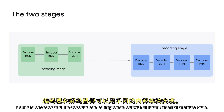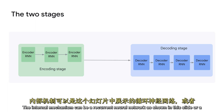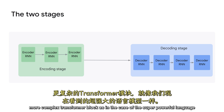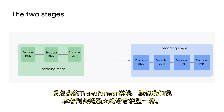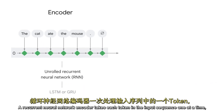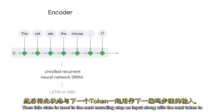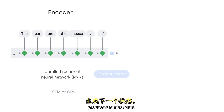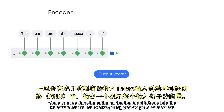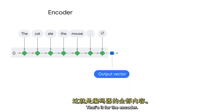Both the encoder and the decoder can be implemented with different internal architectures. The internal mechanism can be a recurrent neural network, as shown in this slide, or a more complex transformer block, as in the case of the super-powerful language models we see nowadays. A recurrent neural network encoder takes each token in the input sequence one at a time and produces a state representing this token as well as all the previously ingested tokens. Then this state is used in the next encoding step as input along with the next token to produce the next state. Once you are done ingesting all the input tokens into the RNN, you output a vector that essentially represents the full input sentence.